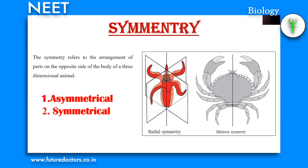Symmetry is divided into radial symmetry and bilateral symmetry. Radial symmetry means when any plane passing through the central axis of the body divides the organism into two identical halves. Examples: cnidarians, ctenophores and echinoderms. The next is bilateral symmetry, where the body can be divided into identical left and right halves in only one plane. Examples: annelids and arthropods.